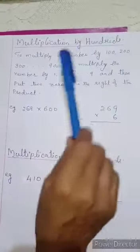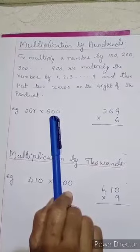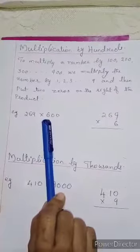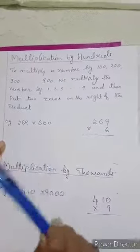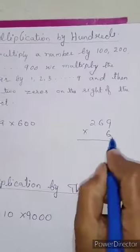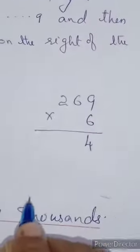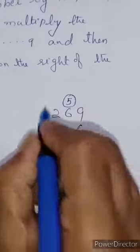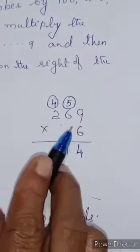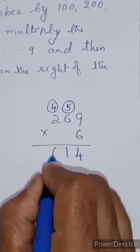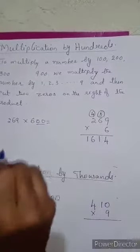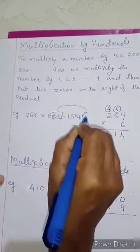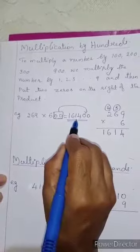Multiplication by 100s. To multiply a number by 100s like 200, 300, or 800, we multiply the number by the first digit, then add 2 zeros to its right. First example: 269 multiplied by 600. Multiply 269 by 6 — 9 into 6 is 54, write 4 and carry 5. 6 into 6 is 36 plus 5 is 41, write 1 and carry 4. 6 into 2 is 12 plus 4 is 16. Then add 2 zeros to the right. Your answer is 1,61,400.